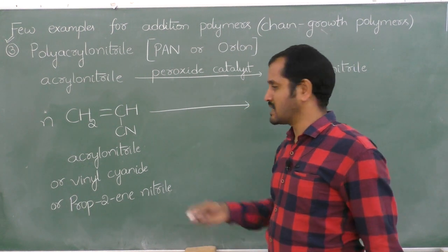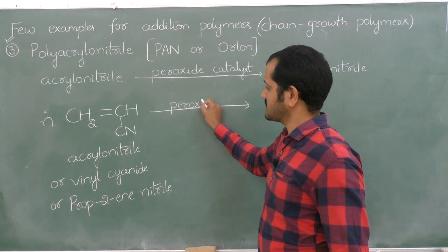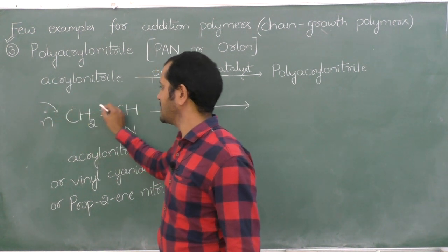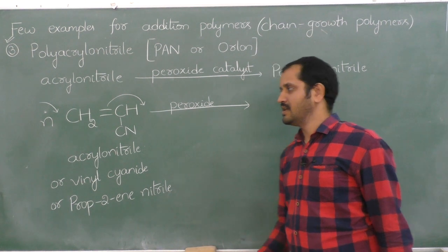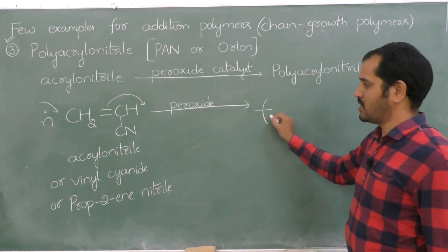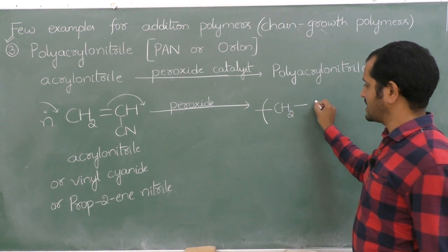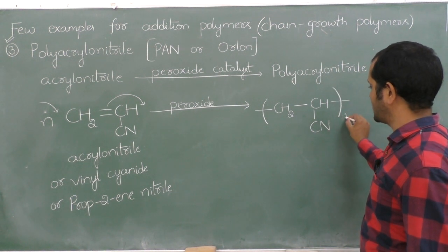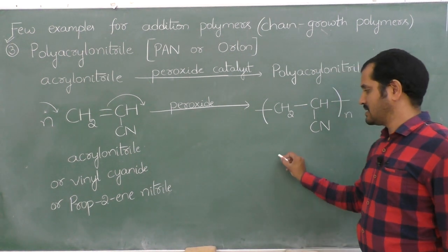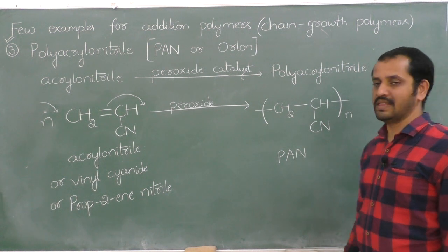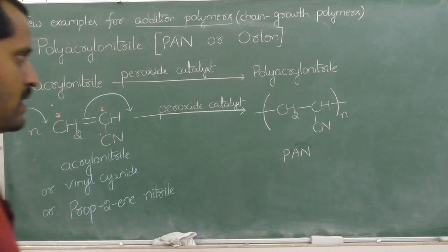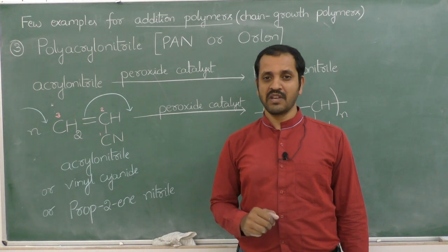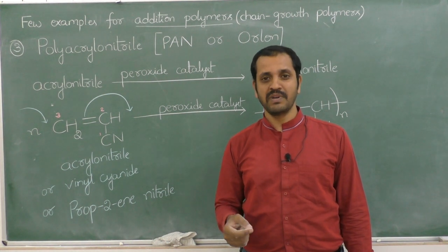Acrylonitrile undergoes polymerization in the presence of a peroxide catalyst to give the repeating unit -[CH₂–CH(CN)]ₙ-, which is polyacrylonitrile (PAN). PAN, also known as Orlon, is used as a substitute for wool in the preparation of blankets, sweaters, carpets, etc.